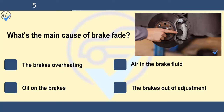What's the main cause of brake fade? The brakes overheating, air in the brake fluid, oil on the brakes, or the brakes out of adjustment. Brakes can overheat and lose efficiency when they're used continually, such as on a long, steep, downhill stretch of road. Using a lower gear when you drive downhill can help prevent the vehicle from gaining speed.